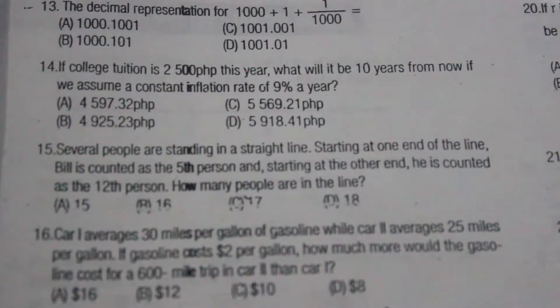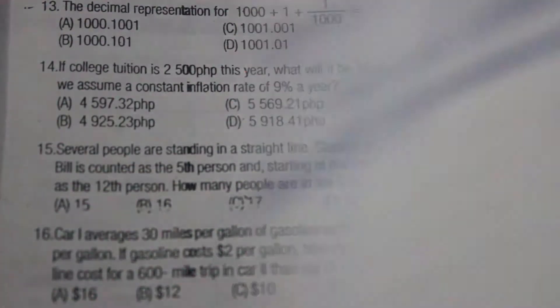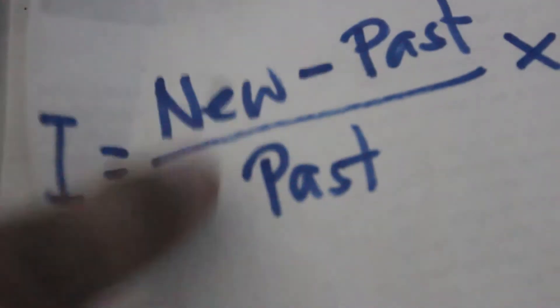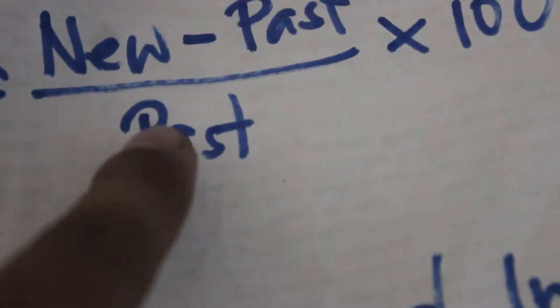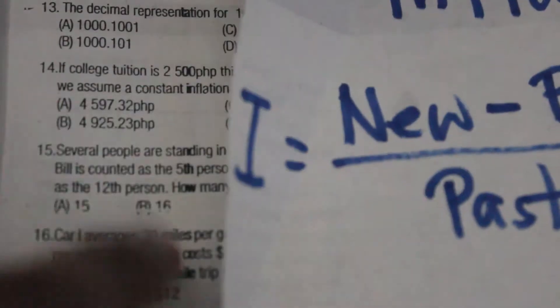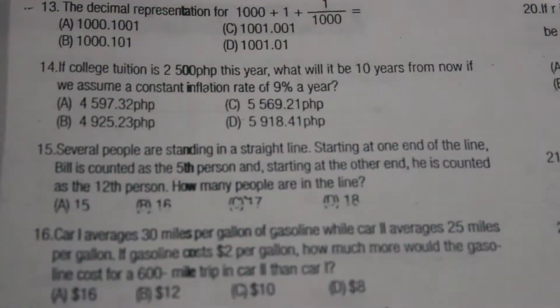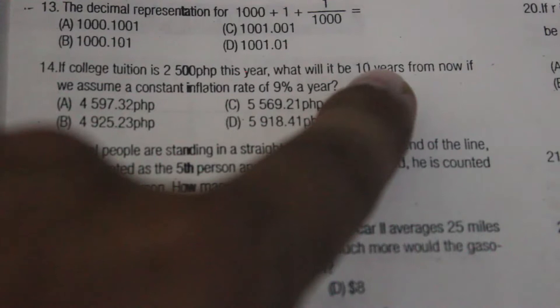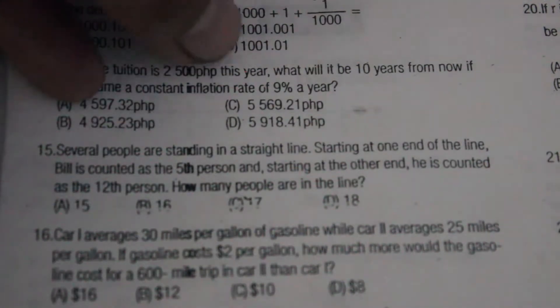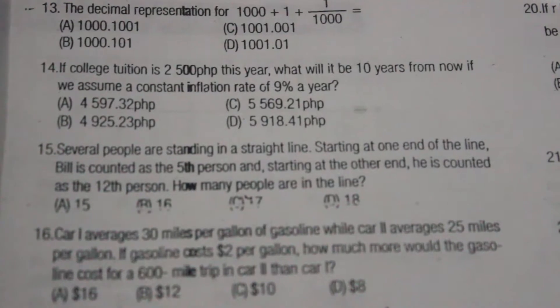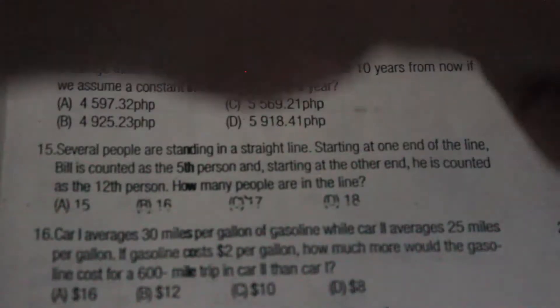Sometimes it's a very confusing problem because of the word inflation. If we follow the formula of the inflation which is: new minus the past, then divided by the past times 100, that's how you get the inflation rate. We cannot use this formula because there is something involved here and that is the 10 years and the 9% a year plus a constant year involved.